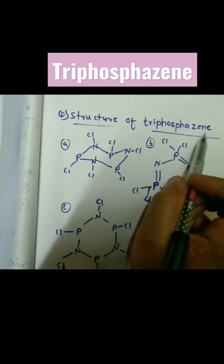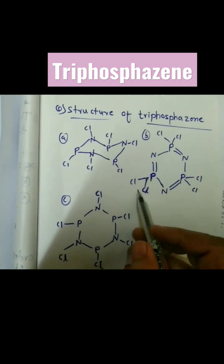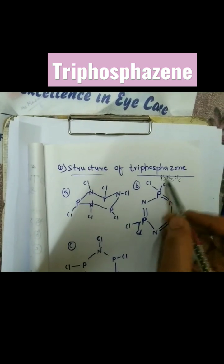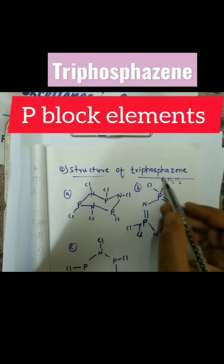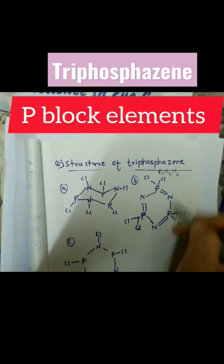The structure of triphosphazene: these are the given structures of triphosphazene in which the formula says triphosphazene means three times phosphorus, three times nitrogen, and six times chlorine (P3N3Cl6).